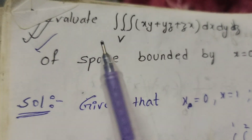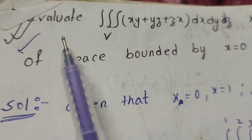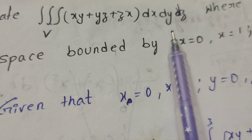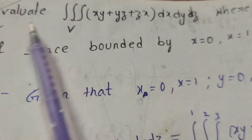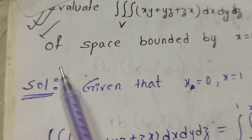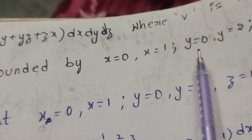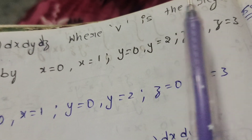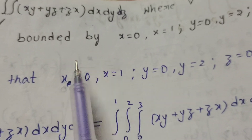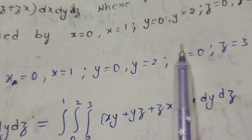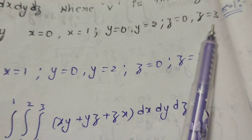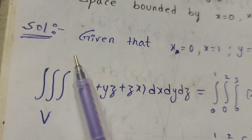Hi everyone, this is Dr. Aethi. Today we are going to evaluate the triple integral over V of (xy + yz + zx) dx dy dz, where V is the region bounded by x equals 0, x equals 1, y equals 0, y equals 2, z equals 0, z equals 3.